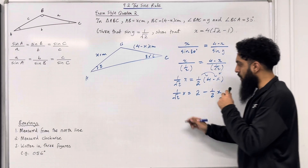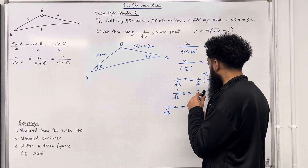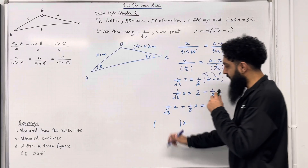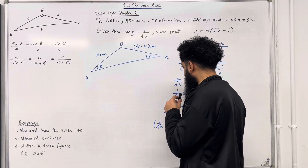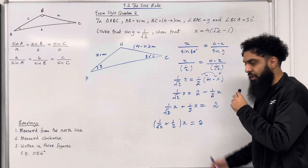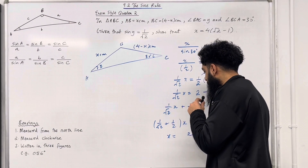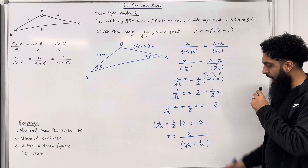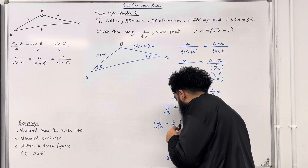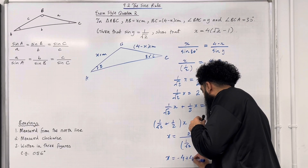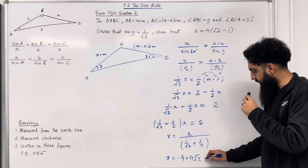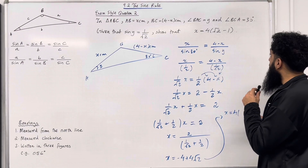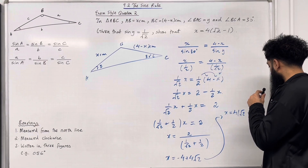Collecting the x terms: 1 over root 2 times x plus one half x equals 2. Taking x out as a common factor: x times (1 over root 2 plus one half) equals 2. Making x the subject: x equals 2 over (1 over root 2 plus one half). Putting this into the calculator gives x equals negative 4 plus 4 root 2. Taking 4 as a common factor gives x equals 4(root 2 minus 1), as required.